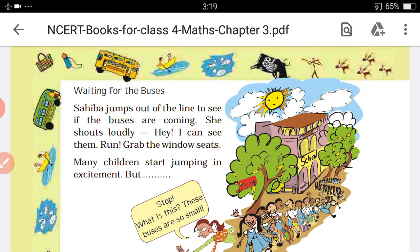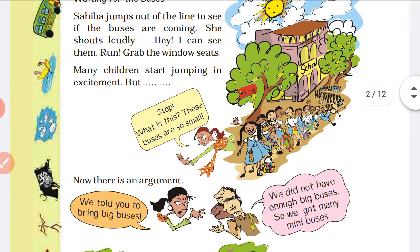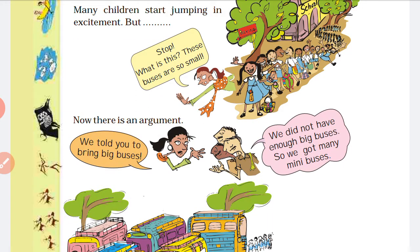On the bus, someone says 'I can't see them — run!' They grab the window seat. But some problems are created. You can see — the bus stops. 'What is this? These buses are so small!' Now there is an argument. 'We told you to bring big buses.'